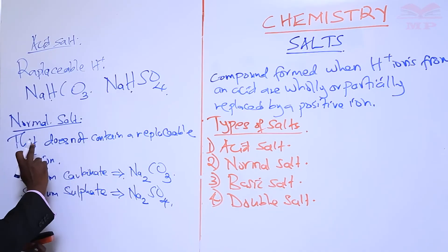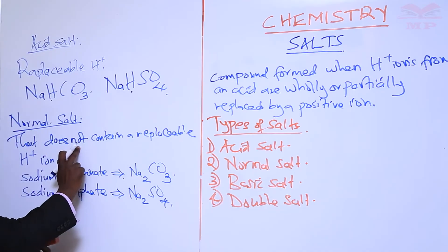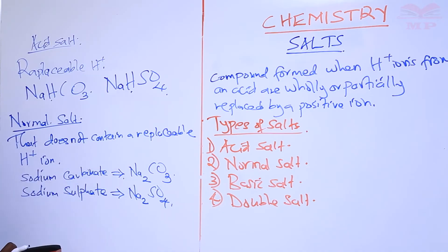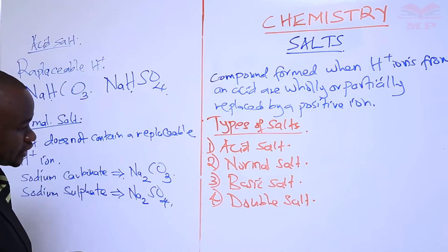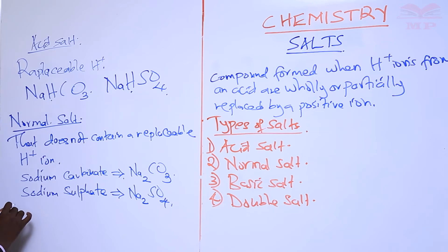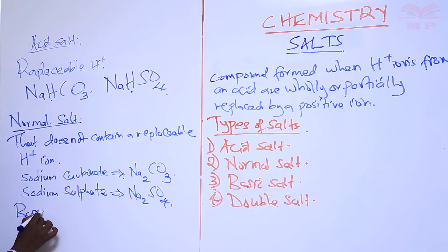A normal salt is a salt that does not contain a replaceable hydrogen ion. We have these two examples: sodium carbonate and sodium sulfate. Our next type of salt is the basic salt — that's number three.